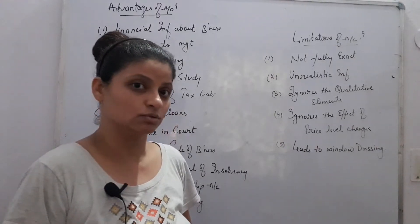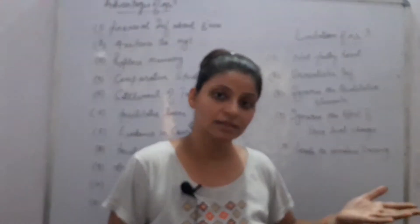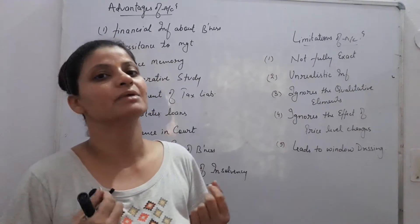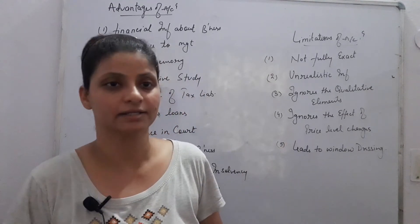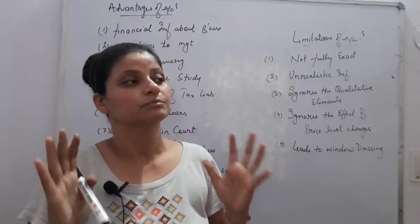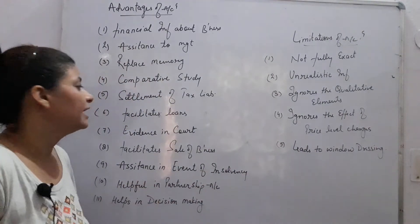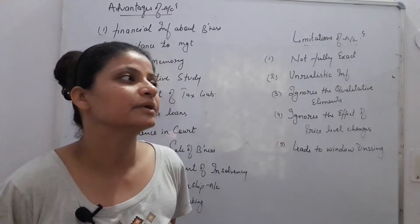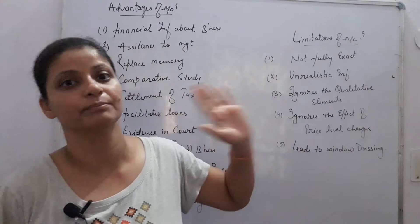Next, facilitates loan. If we have our balance sheet properly maintained — how much assets and liabilities are there, when everything is clearly mentioned — the bank can easily assess our capacity and provide a loan to us. How much assets are there, how much loan-free assets are there, how much the bank can give us based on our assets.